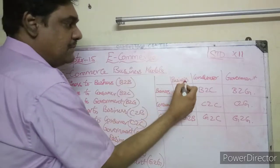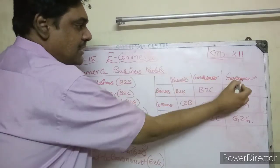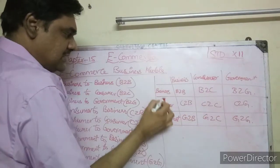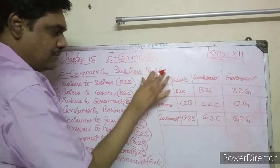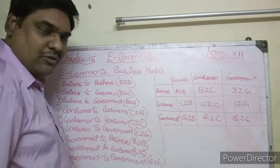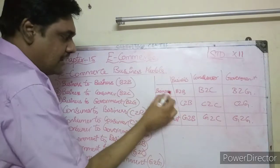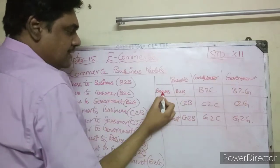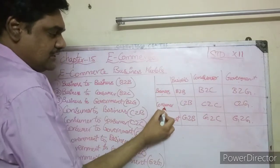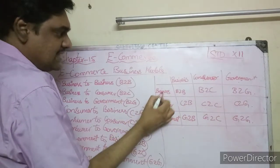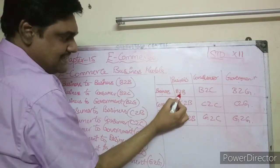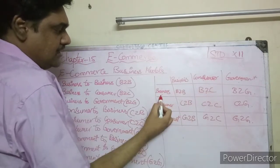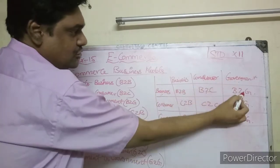The three entities are: business, consumer, and government. We set these as both row and column headers in a table. So across the top: business, consumer, government — and down the side: business, consumer, government. This gives us business to business, business to consumer, and business to government.